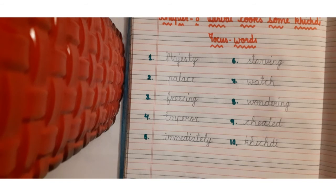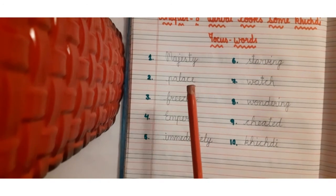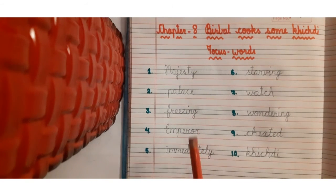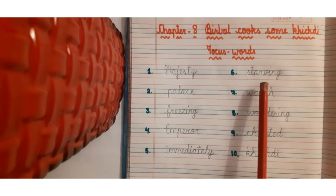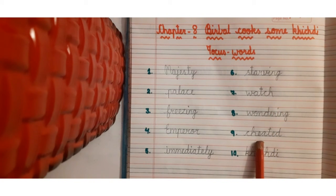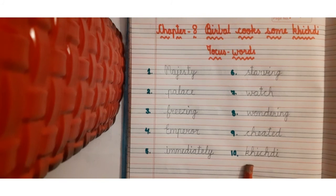Let's say it once again. Majesty, palace, freezing, emperor, immediately, starving, watch, wondering, cheated, and khichdi.